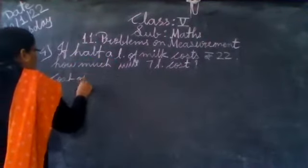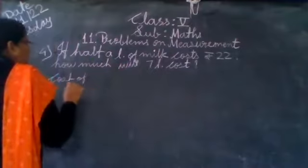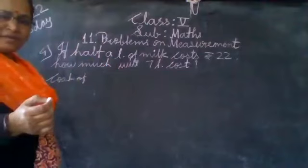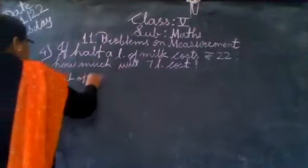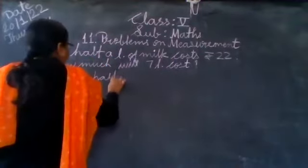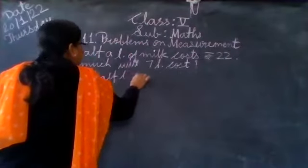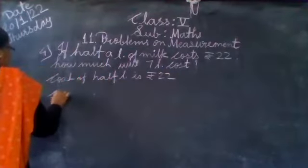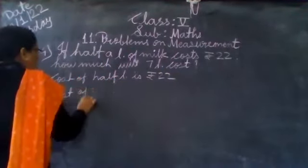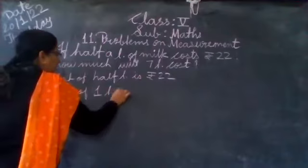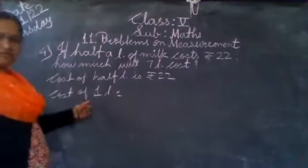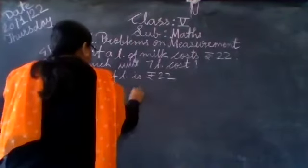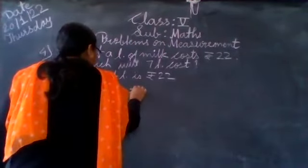Cost of half litre — half means you can say 500 millilitres. To find the cost of one litre, if the cost of half is given, we will multiply it by 2.